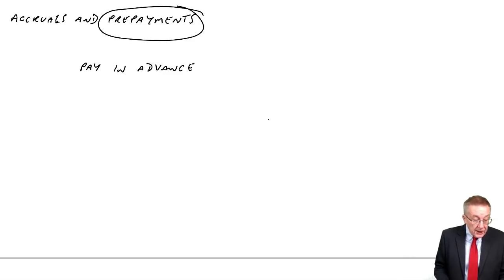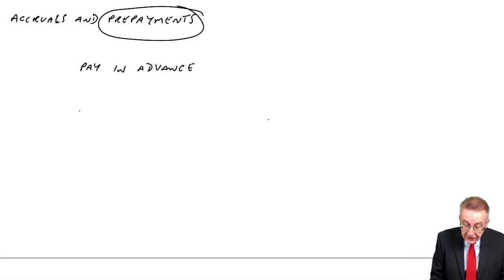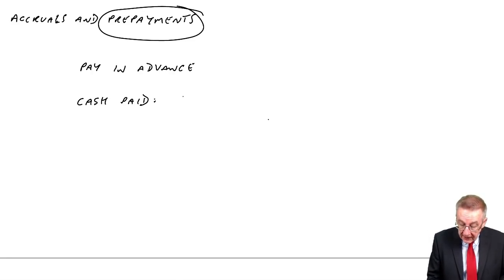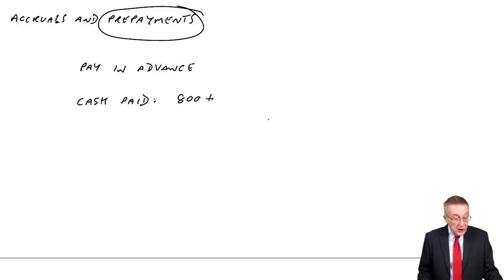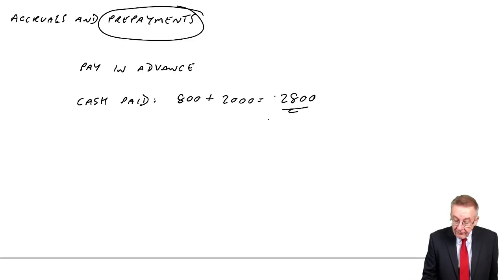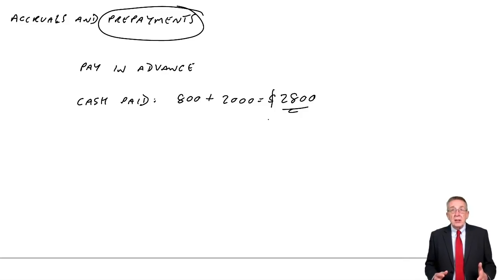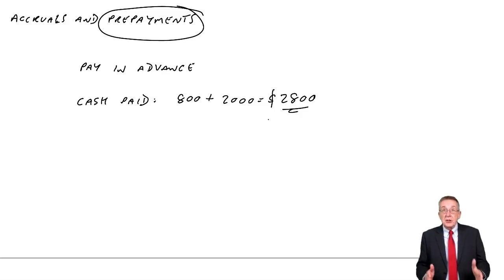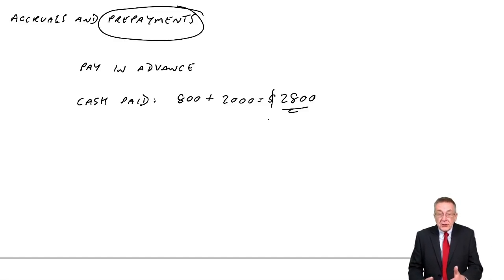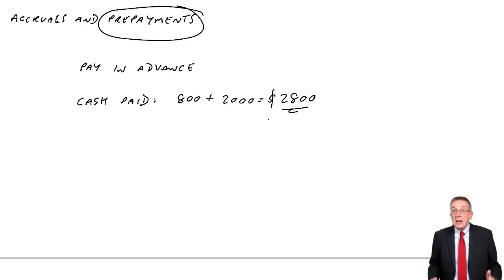Her year end is the 31st of December, and so the cash she's paid over her accounting year: on the 5th of January she paid $800, and on the 15th of June she paid another $2,000. So the total cash paid is $2,800. However, what's important for our financial statements? In the statement of profit and loss, we need to know the cost of insurance for our year. That $2,800 is the cost of insurance for the six months to June 2000 and the 12 months to June 2001 — that's a lot more than her accounting period.